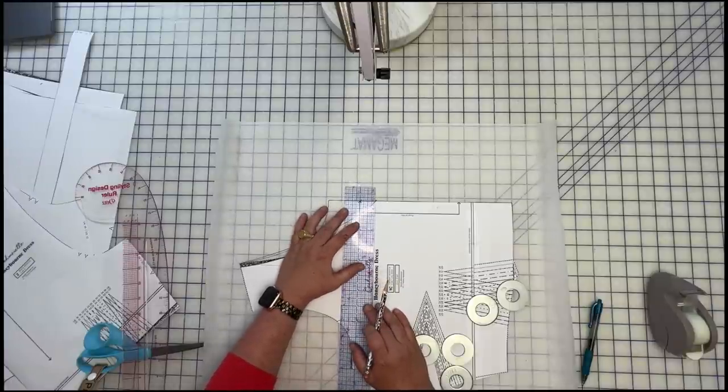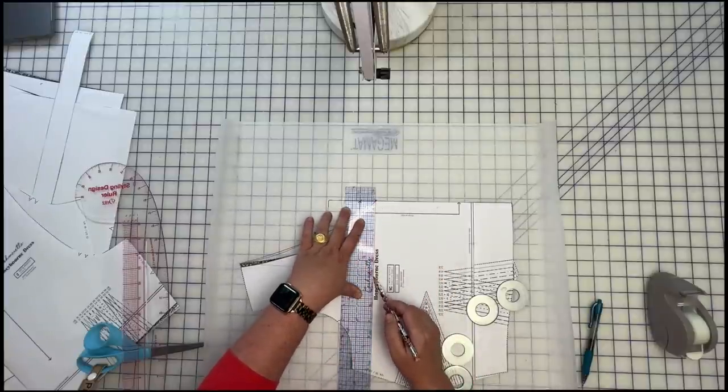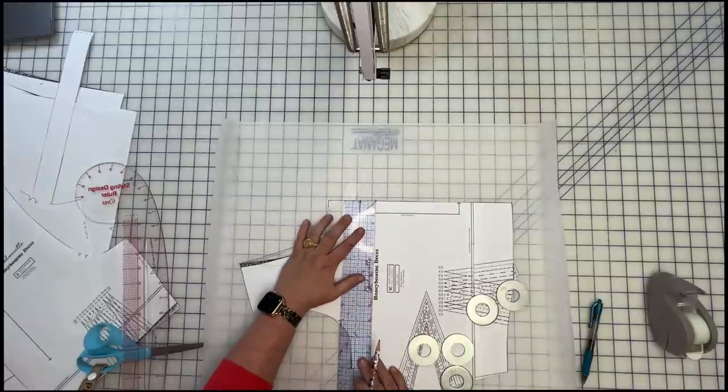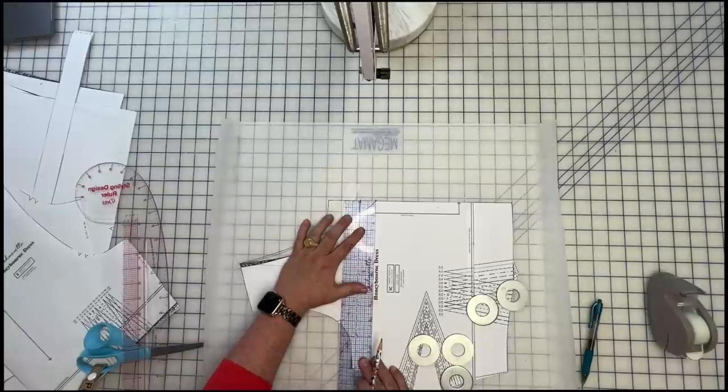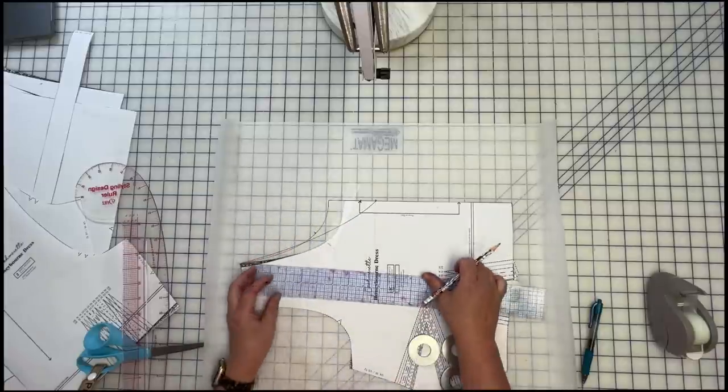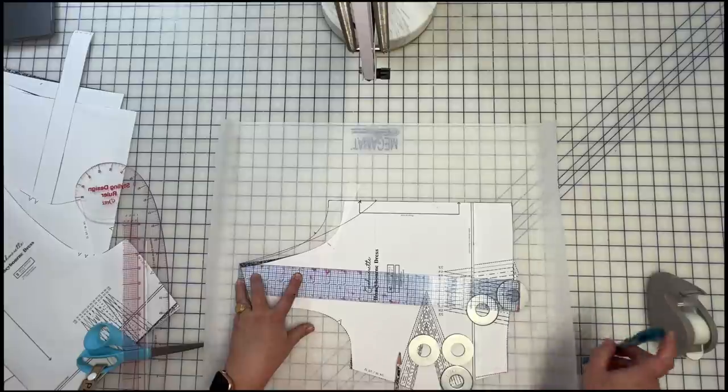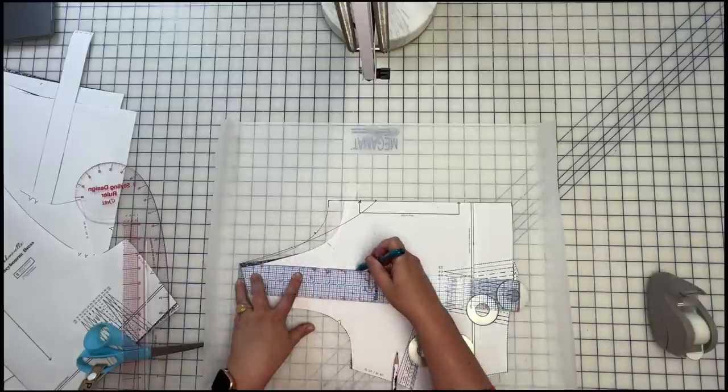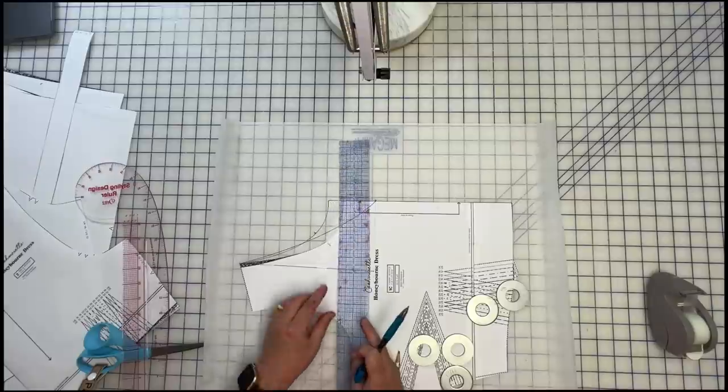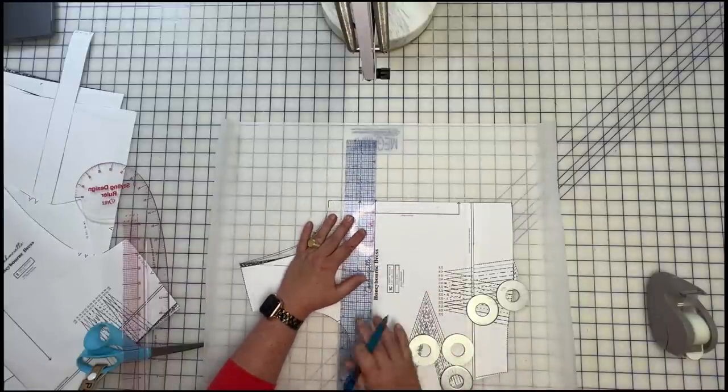So I am going perpendicular to my fold line and I'm making a line out. And that line is for those of you that like math four and three quarters out. So four and three quarters from center front to this point. And then I take a line perpendicular from that one and I'm going up to my shoulder point, matching that spot up to my shoulder point.